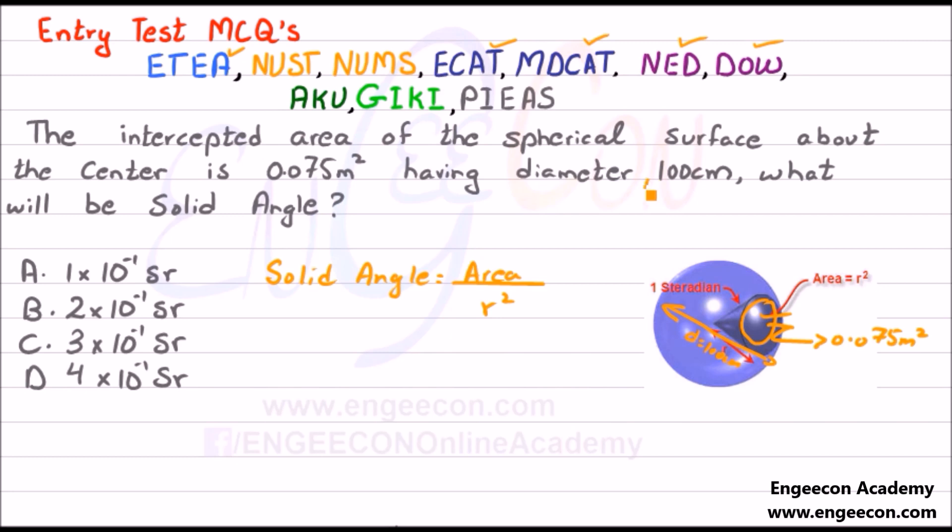There is a little conversion in this MCQ. As the diameter is in cm, we have to convert it to meters first. Diameter is equal to 100 cm which is equal to 1 meter.